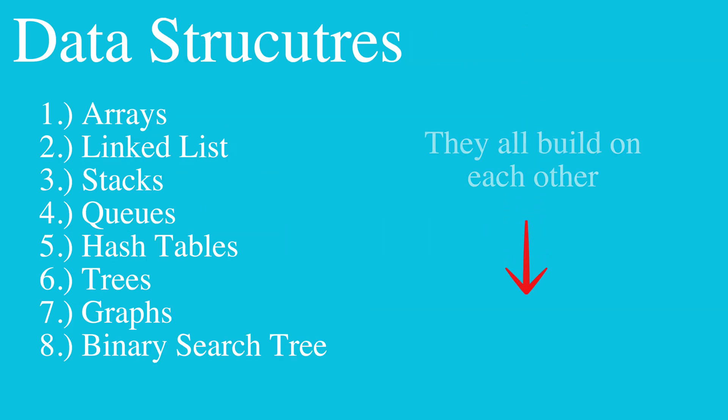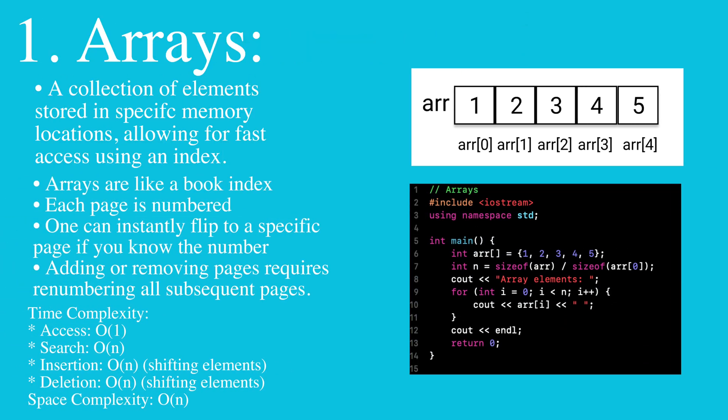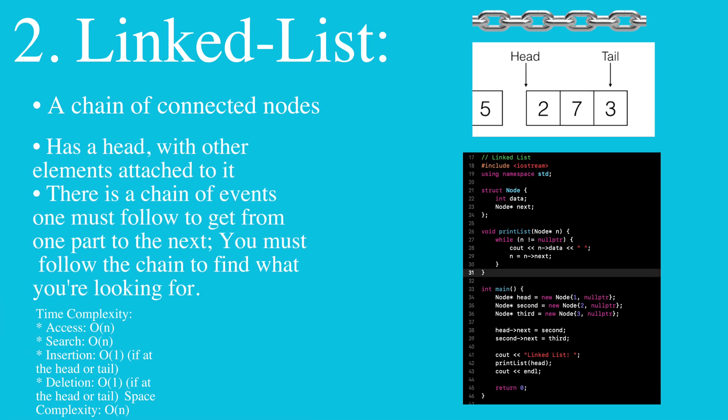This is data structures with its different levels. Arrays are a collection of elements stored in contiguous memory locations, allowing for fast access using an index. A linked list is a sequence of nodes where each node contains a value and reference to the next node.